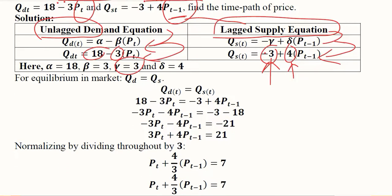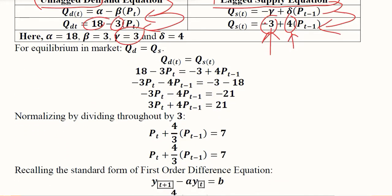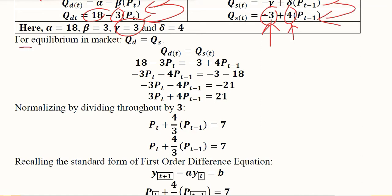Now we can equate these two values: Qd equals Qs at equilibrium. This is the requirement that we have been studying. Once we put the value of Qd here and Qs here, we will get this set of steps that we can do easily.